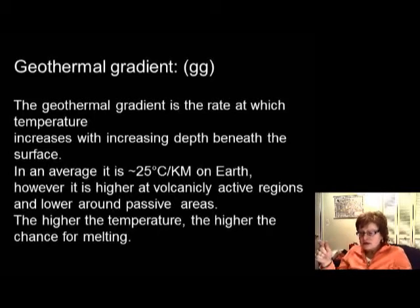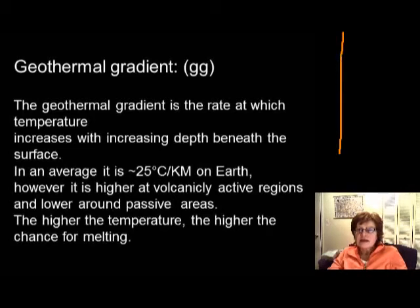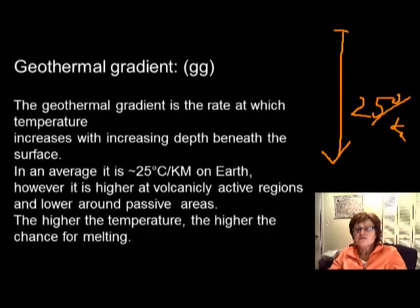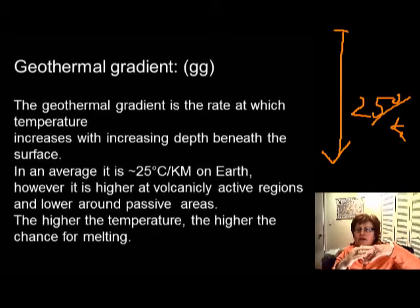The average geothermal gradient on Earth is 25 degrees Celsius per kilometer. So every kilometer as you go down, it's going to be 25 degrees Celsius warmer. But that's just the average — you will probably never be able to measure exactly this anywhere. For example, if you're in an area like a convergent plate boundary like the western US.